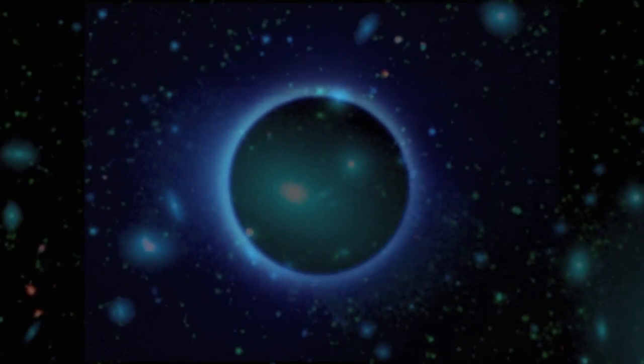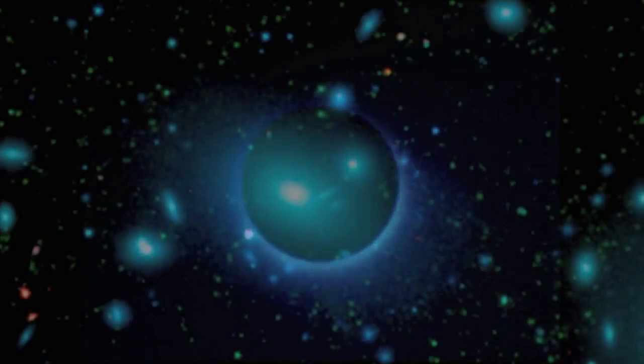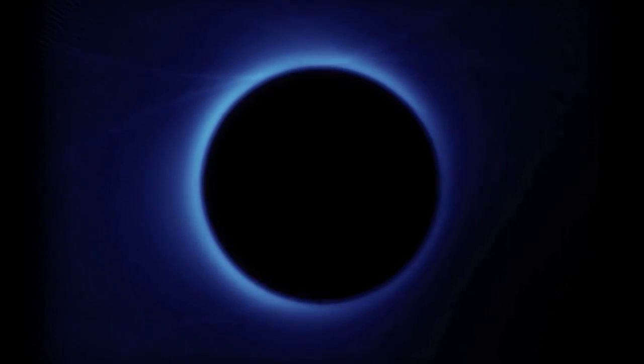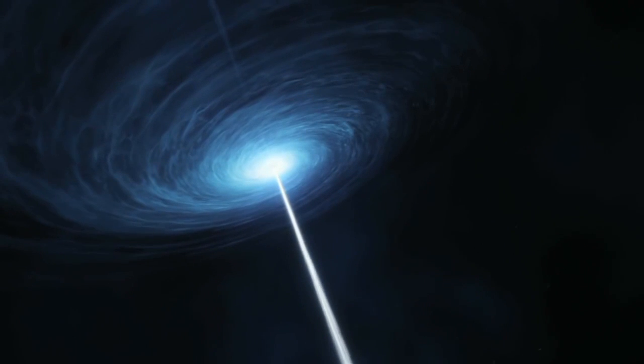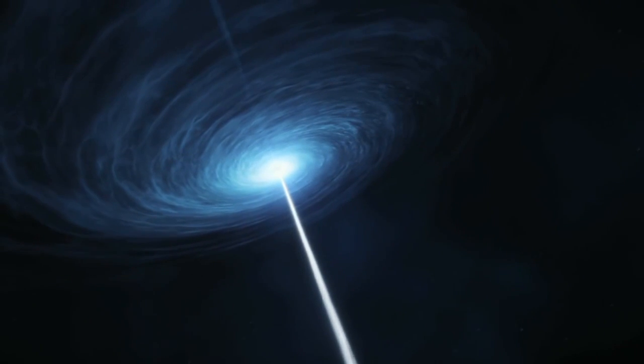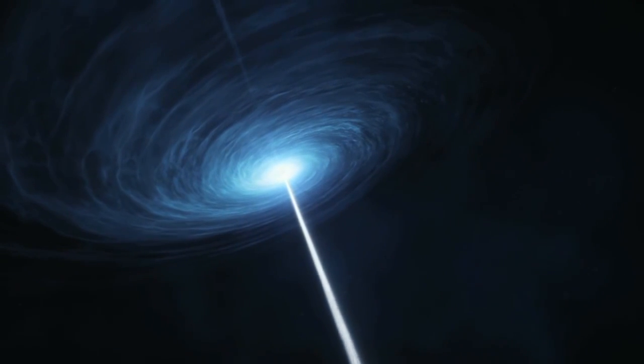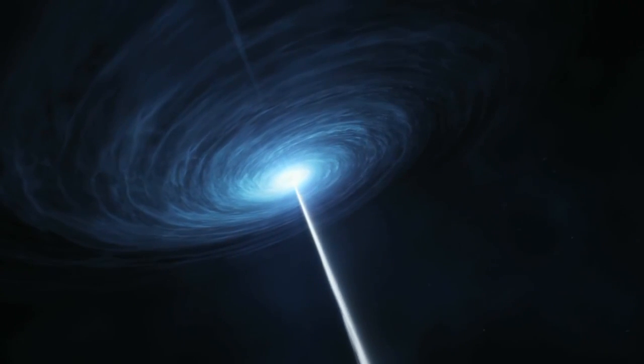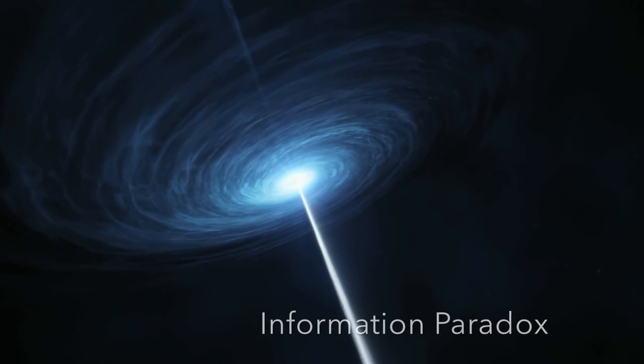Over time, as the black hole loses mass to Hawking radiation and the Planck star continues to expand after the rebound, the event horizon of the black hole will slowly contract, eventually reaching its surface of the Planck star contained within. All of the information the black hole ever consumed over its lifetime will suddenly be released to the universe, and by this it solves the information paradox.